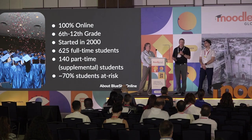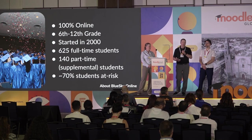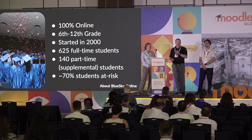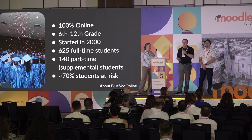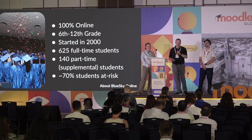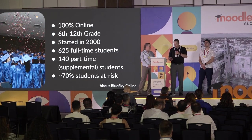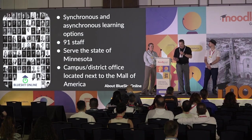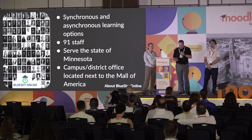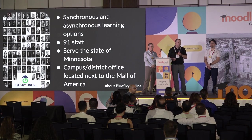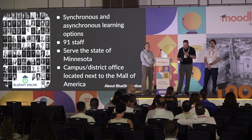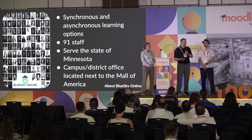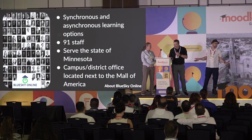70% of our students are at risk for not graduating — they meet one or more of 13 criteria demonstrating some kind of barrier to graduation. So we work really hard to make sure our students have the skills and knowledge to meet all the graduation requirements for the state of Minnesota. We have two types of classes: synchronous and asynchronous, and both options really serve the broad needs of our students. Currently we have 91 staff and our district office is located right across from the Mall of America.